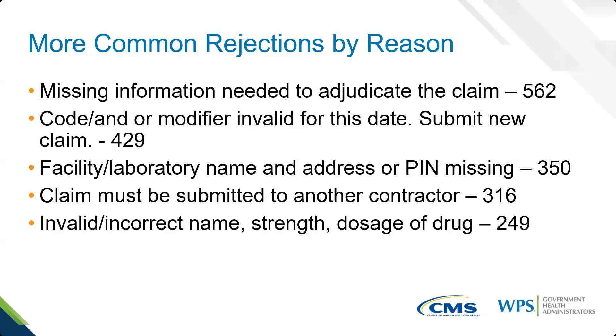'Claim must be submitted to another contractor' — similar to the railroad board issue, the claim needs to go to a different contractor, not WPS. Next is 'invalid or incorrect name, strength, and dosage of drug.' This occurs when billing a J code for a drug. Guidelines for some J codes require you to report in item 19 on the claim the name of the drug, the strength, and the dosage.